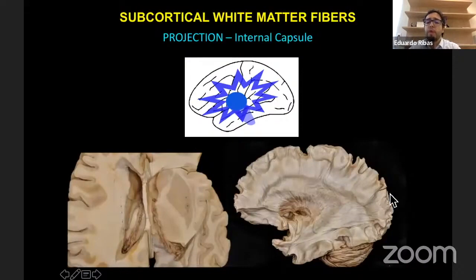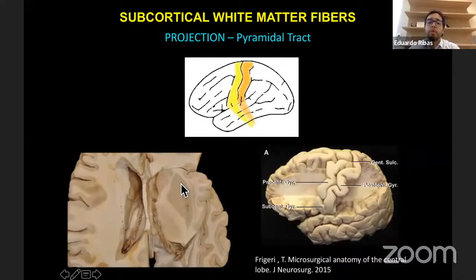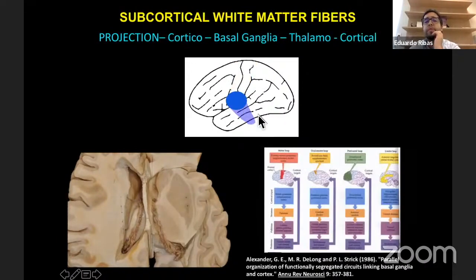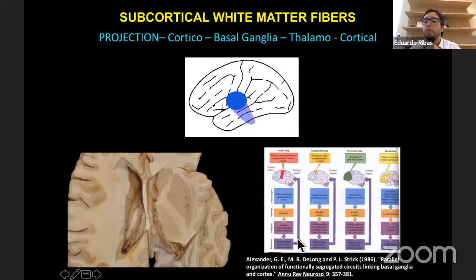The internal capsule is made of projection fibers inside the central core — well-defined there, but merged inside the frontal lobe. The most posterior and eloquent part is made by the pyramidal tract arising from the precentral gyrus, located at the genu and posterior limb of the internal capsule. Other projection fibers form loops from cortex to basal ganglia to thalamus and back to cortex, including a motor loop, oculomotor loop, and prefrontal loop — none of which cause functional deficits when approached unilaterally.